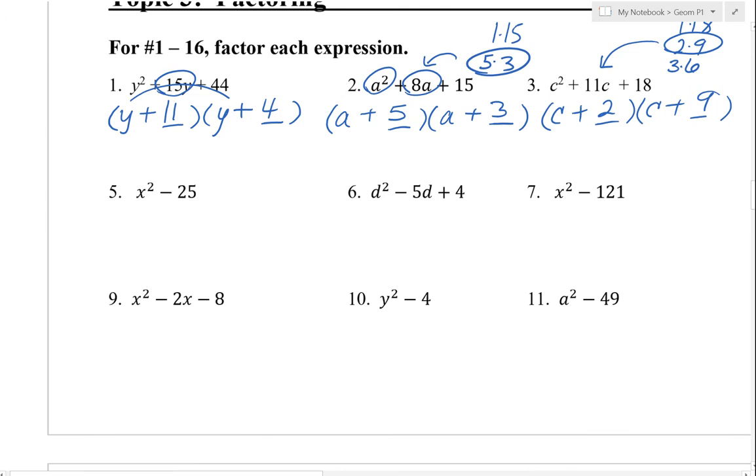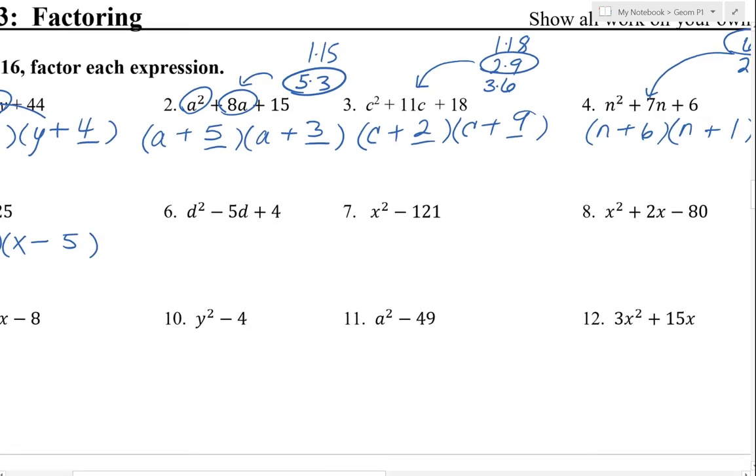Here we only have two terms, and notice that both those terms are perfect squares. So we have a difference of squares. x times x gives us the x squared, and then the square root of 25 is 5. And then because we have that subtraction, we're going to have a positive and the negative, and the reason why this works is because we get an x squared, you get a negative 5x, and you get plus 5x minus 25. So those in the middle, they actually cancel away, so that's why we want them to be the same but opposite signs.